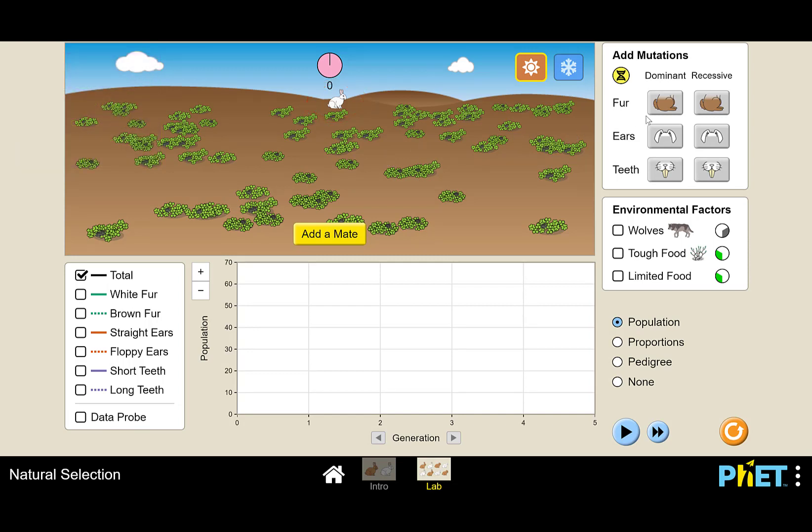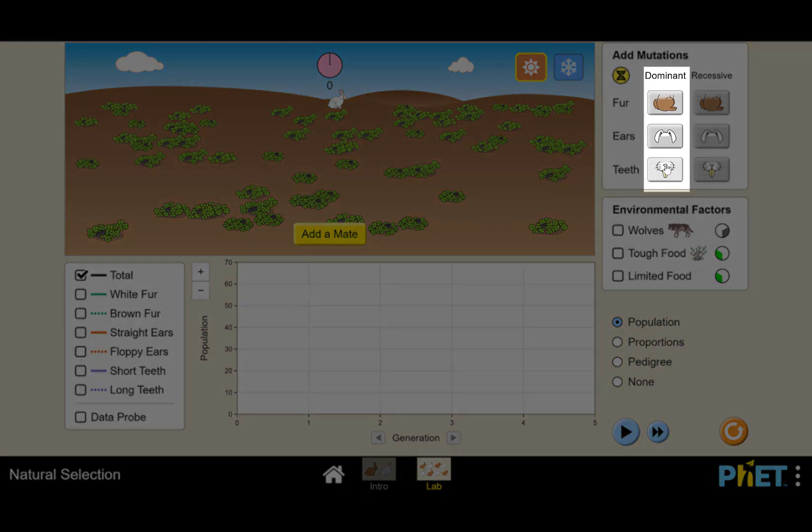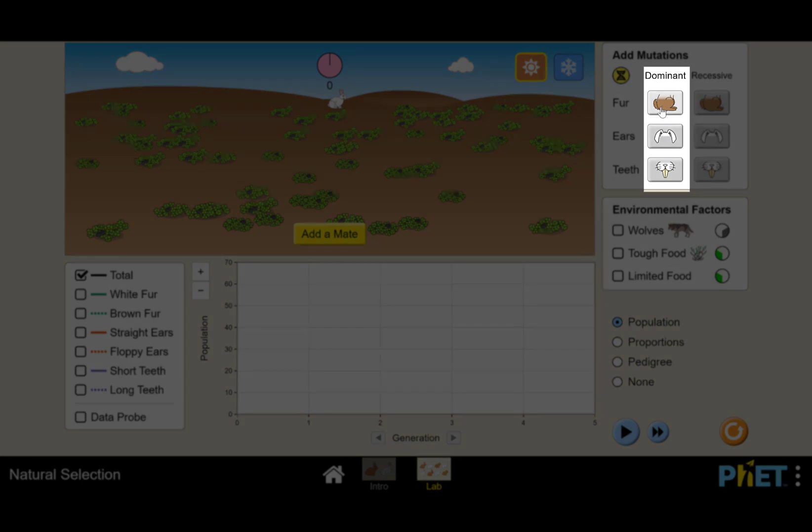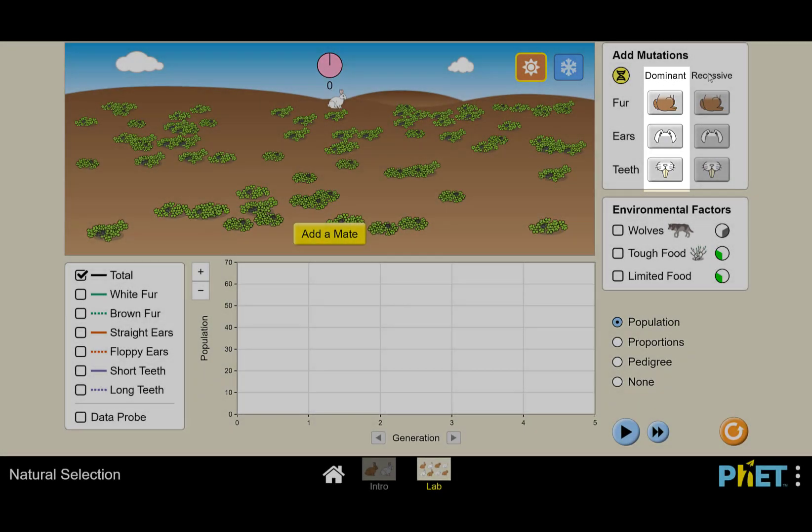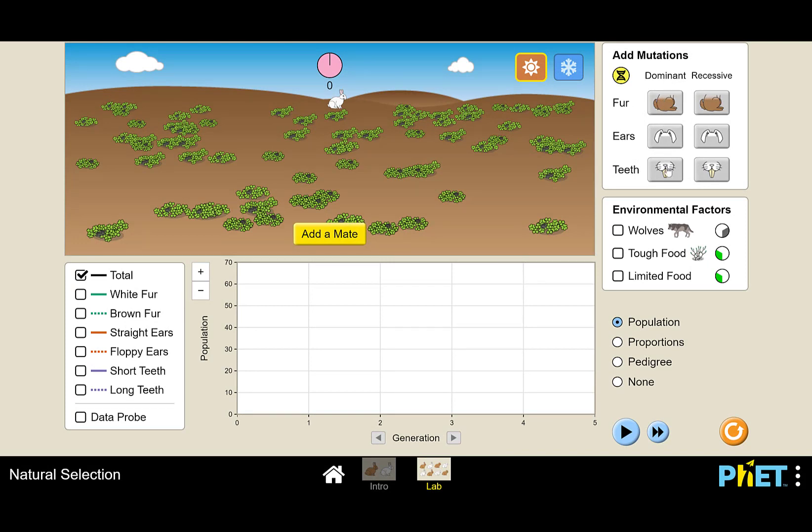In the upper right hand part of the screen, this is where you will indicate the trait that you want to test. You can give the rabbits brown fur, you can give them long ears, or you can give them long teeth. So those are your three options for the traits. When you select your trait, make sure that you are hitting the buttons that are under the dominant column and not the ones on the recessive column. So you will only hit one of these buttons here on the left.